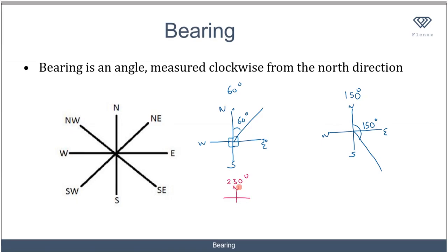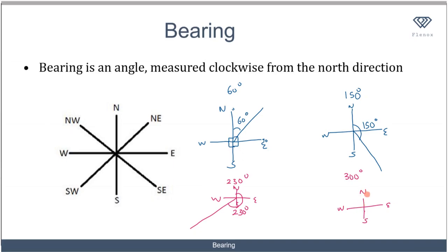How about a bearing of 230 degrees? I draw my north, south, west, and east. From north clockwise to south is 180 degrees, continuing to west is 270 degrees, and 230 lies somewhere between 180 and 270. So the angle starting from the north clockwise to this line is a bearing of 230 degrees. And finally, a bearing of 300 degrees lies between 270 and 360, so the angle from the north direction going clockwise is the bearing of 300 degrees.